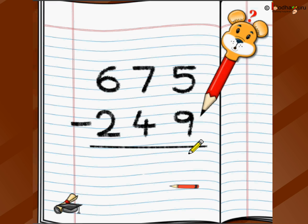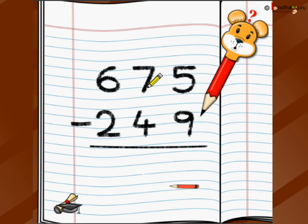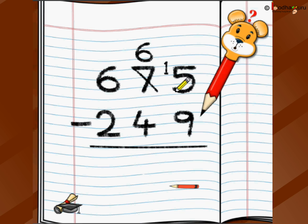Now, 5 minus 9 — 9 is bigger than 5, so how do we do it? We use borrowing, as we learned in the last video. The 5 asks its left neighbor, 7: 'Can I borrow 10 from you?' The 7 says yes, but it reduces itself by 1, becoming 6. So the 5 becomes 15, and the 7 is crossed out and replaced with 6.